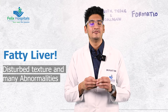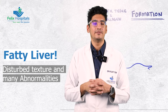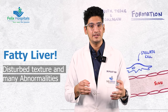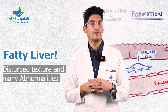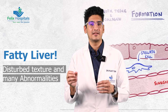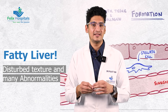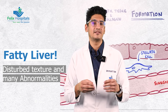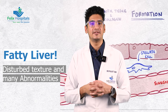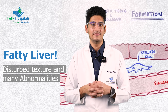The liver becomes small and shrunken, and the margins of the liver become irregular. We also see a phenomenon called caudate lobe hypertrophy — the caudate lobe increases in size in cirrhosis. As a radiologist, we assess the ratio of the caudate lobe to the right lobe of the liver; when it becomes more than 0.65, it is highly suggestive of liver cirrhosis.